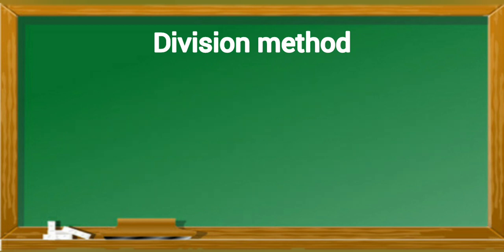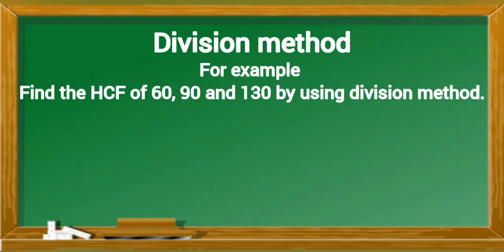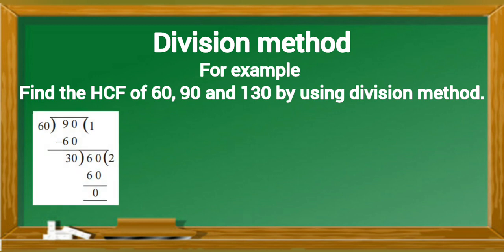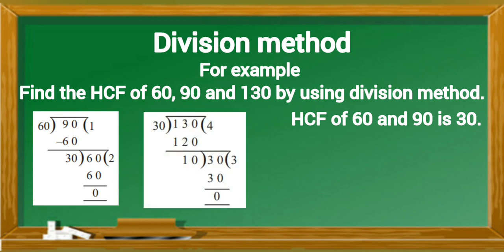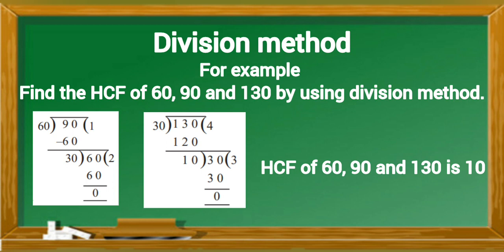For example, find the HCF of 60, 90 and 130 by using division method. HCF of 60 and 90 is 30. Now, find HCF of 30 and 130. So, HCF of 60, 90 and 130 is 10.